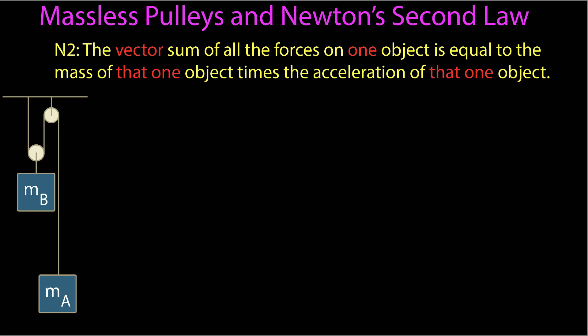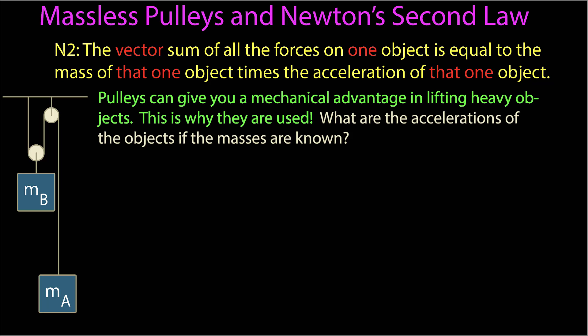In this video, I want to do a more complicated example with pulleys for more practice with Newton's second law in one dimension. Newton's second law tells us the vector sum of all the forces on one object is equal to the mass of that one object times the acceleration of that one object. So I've got a couple pulleys and a couple masses here. In this particular configuration of masses and pulleys, what are the accelerations of the objects, assuming that we know the masses?